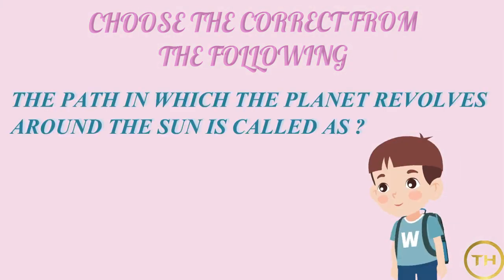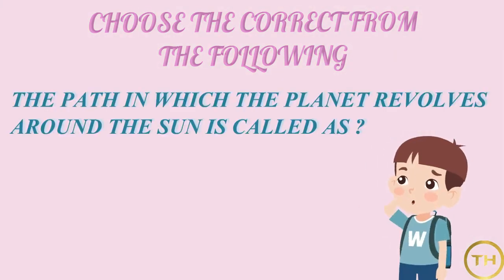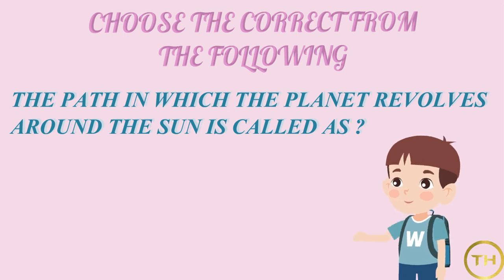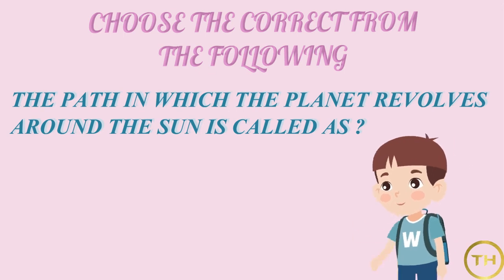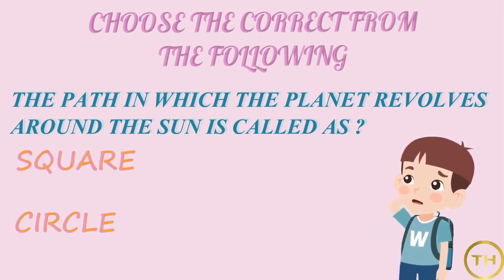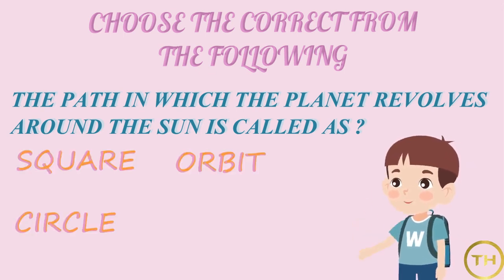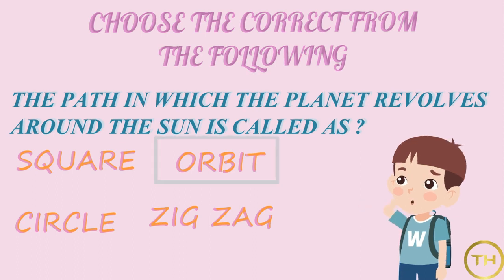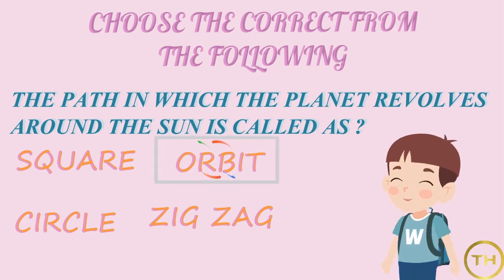The path in which a planet revolves around the sun is called: square, circle, orbit, or zigzag? The answer is orbit.